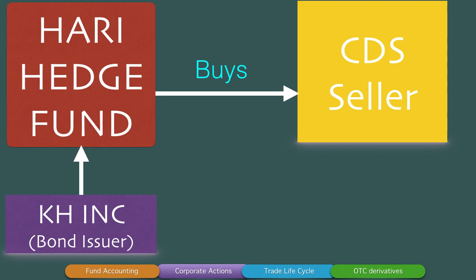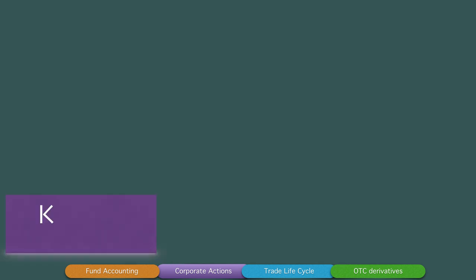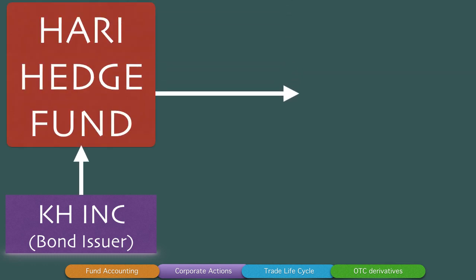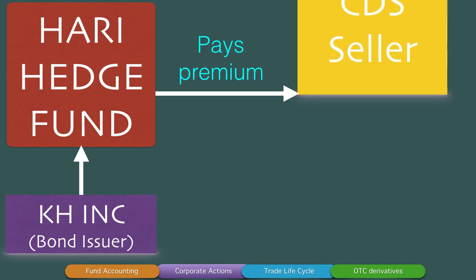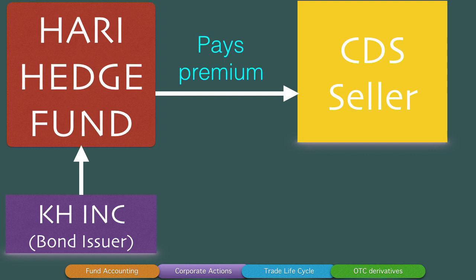That is a very big 'if.' Now since Hari Hedge Fund is buying the CDS, in the contract between Hari Hedge Fund and the CDS seller, the underlying issuance is called the reference obligation, and KH Inc. — which has issued the bonds — is called the reference entity. Now, since Hari Hedge Fund has bought the CDS, it must always pay a premium to the CDS seller. This premium can be annual, quarterly, or semi-annual. Most CDS that I've researched for this video have annual premium payments. The CDS seller collects the premium from Hari Hedge Fund every year as long as the CDS is outstanding.